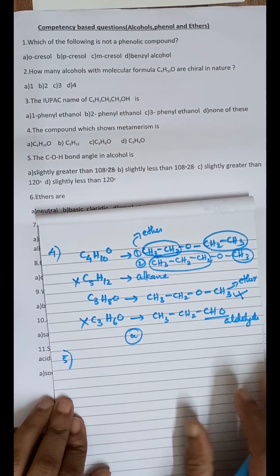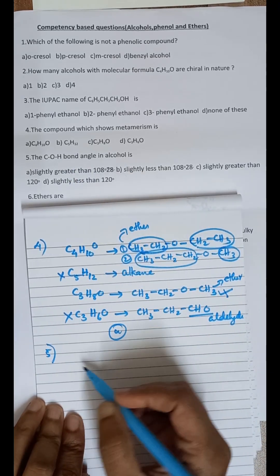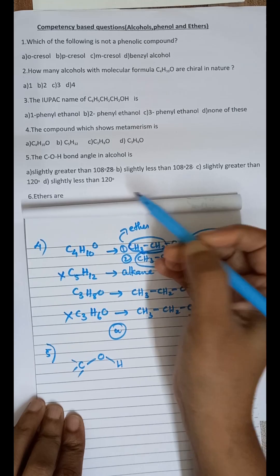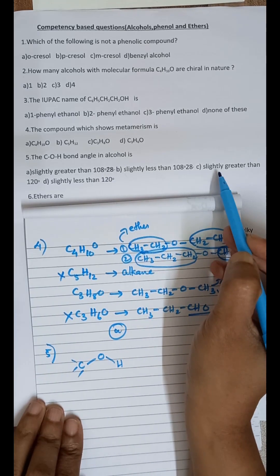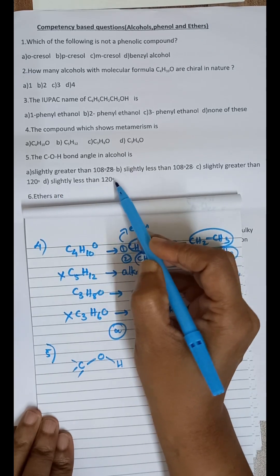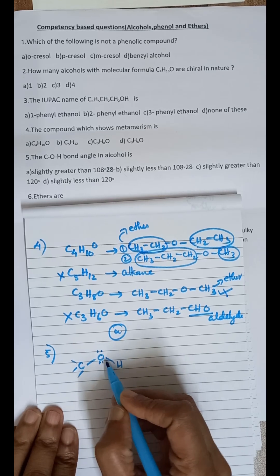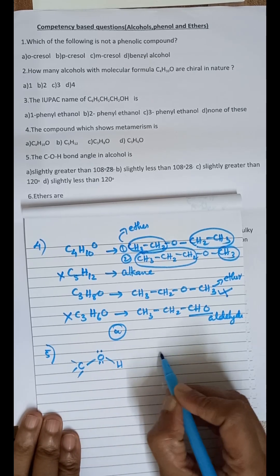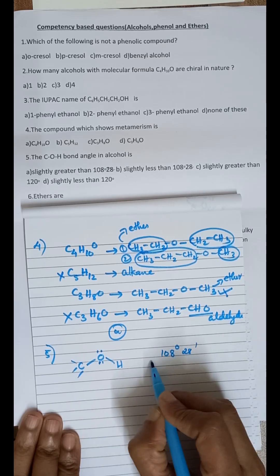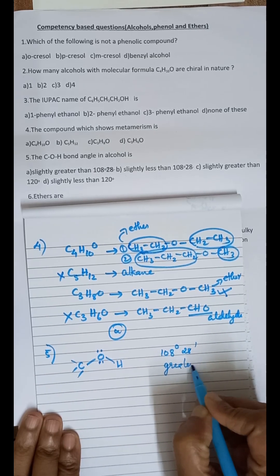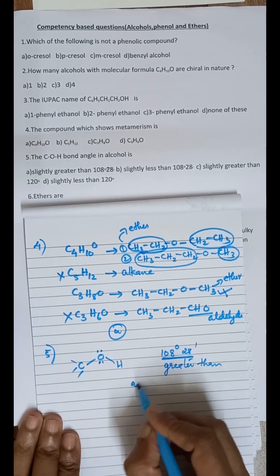Question 5: the C-O-H bond angle in alcohol. We know that the oxygen atom has two lone pairs of electrons, so we expect a tetrahedral angle of 108°28'. However, due to the repulsion from these two lone pairs, the actual bond angle is slightly greater than 108°28'. So option A is the correct answer.